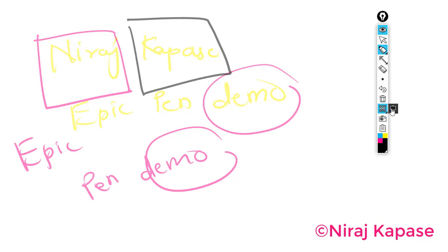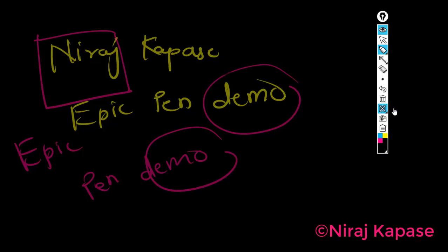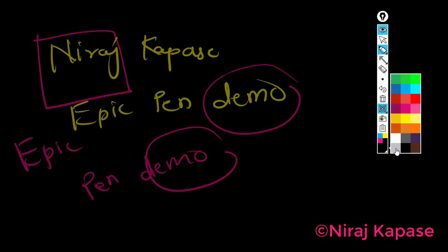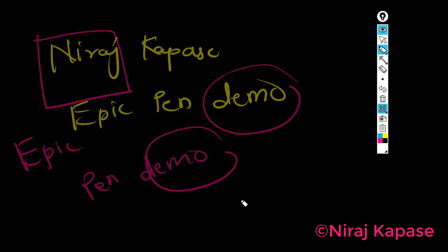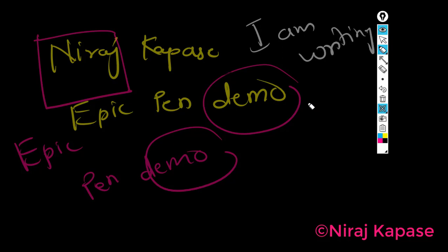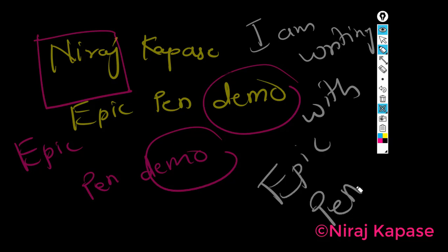We also have the blackboard option. If I switch to the blackboard, everything appears with a black background. I can choose a white color — like chalk — and write 'I am writing with Epic Pen.' You can use your mouse to write and highlight with this.